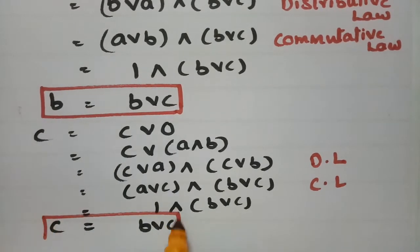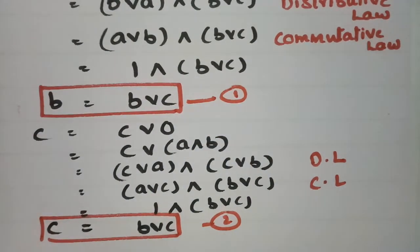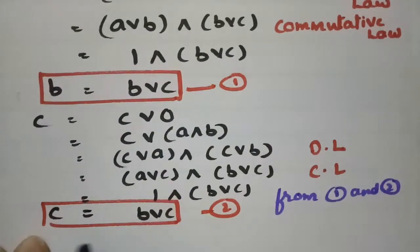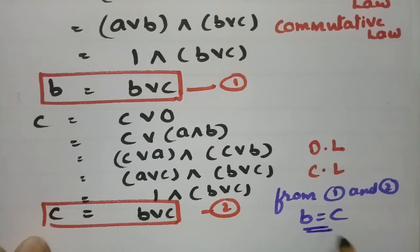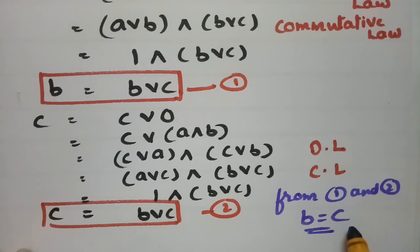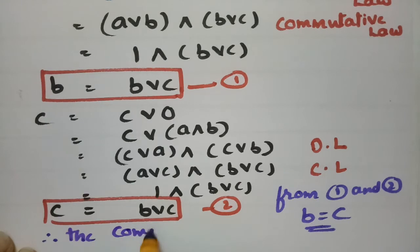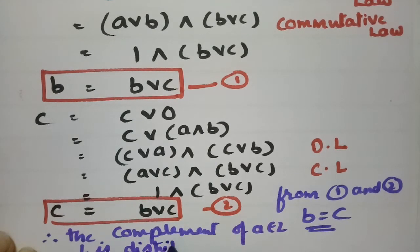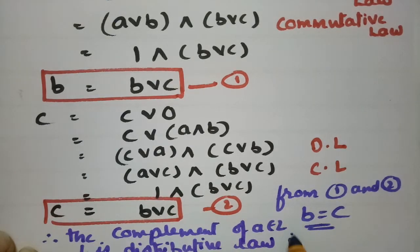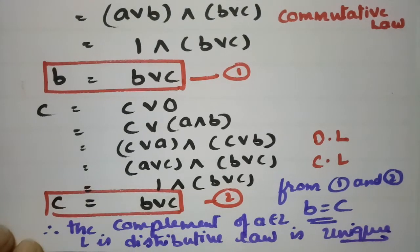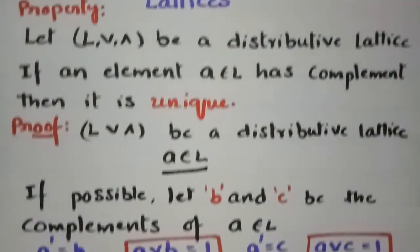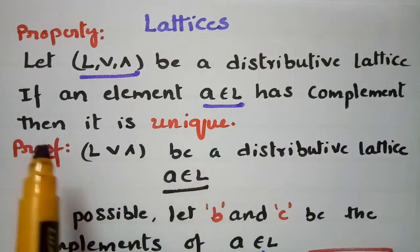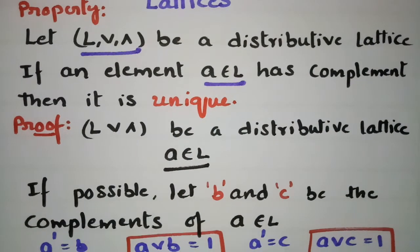From result 1 and result 2, the value of B equals B join C and the value of C also equals B join C. Therefore we conclude that B equals C. So the complement of A belonging to L, where L is a distributive lattice, is unique. We have only a single complement for each and every element of a distributive lattice.